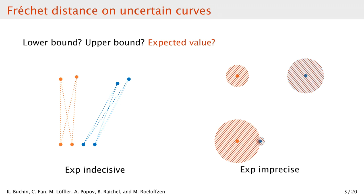The expected distance then simply averages the distances over all the realizations. In the imprecise model, we have to take an integral to find it.